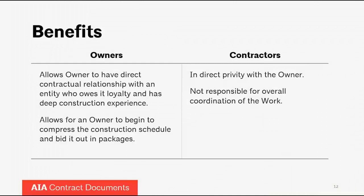So why would you use such a delivery model? What are the benefits? To the owner, use of a CM as advisor delivery model allows the owner to have a direct contractual relationship with an entity — the CMA — that owes it loyalty and has deep construction experience. This further advances the goals of the owner and acts as an independent voice, bringing to bear all of the experience the CMA has in dealing with and working on construction projects.